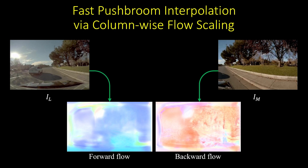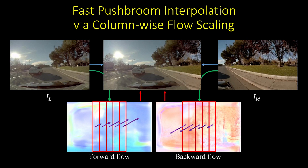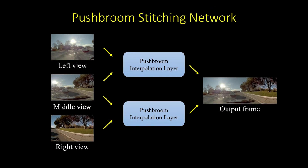Instead of scaling the flow and warping images K times, we propose a fast push broom interpolation method to perform column-wise flow scaling. Therefore, we can generate the whole stitched view in a single warping step. Our push broom stitching network is end-to-end trainable and learns dense flow fields to smoothly align multiple input videos through spatial interpolation.